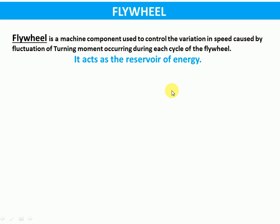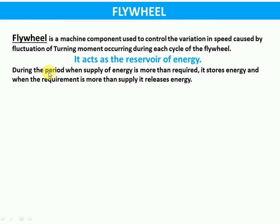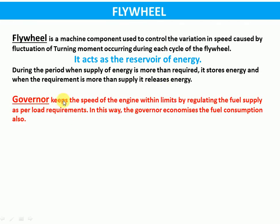During the period when supply of energy is more than required, the flywheel stores energy, and when the requirement is more than supply, it releases energy. The flywheel is very different from a governor. A governor keeps the speed of the engine within limits by regulating the fuel supply as per load requirements, thereby economizing fuel consumption, whereas the flywheel has no concern with the supply of fuel.